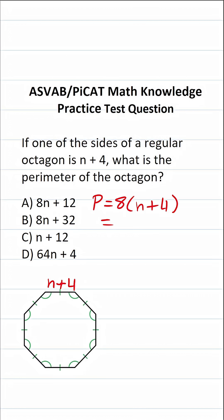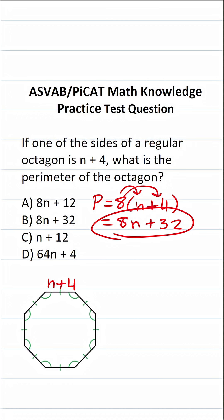In this case, the only thing we really have to do is take this 8 and distribute it to both terms. 8 times n is 8n, and 8 times 4 is 32. So the perimeter of this regular octagon with the side length of n plus 4 is going to be 8n plus 32. We can see that is, in fact, answer choice B.